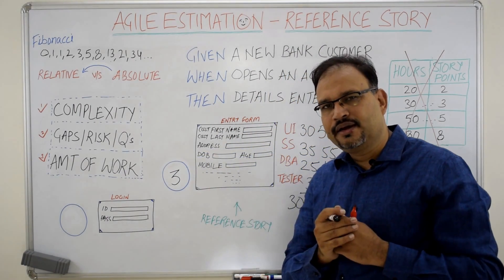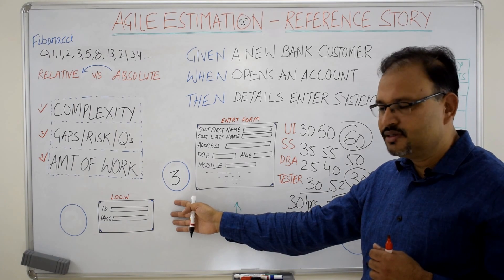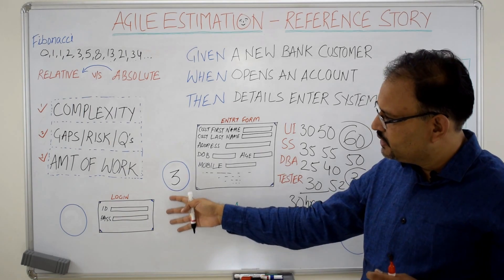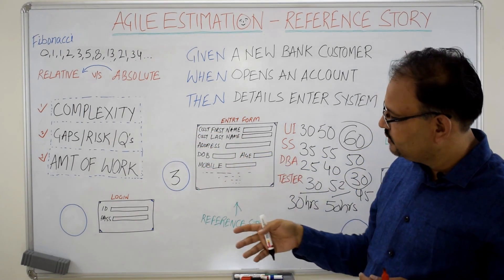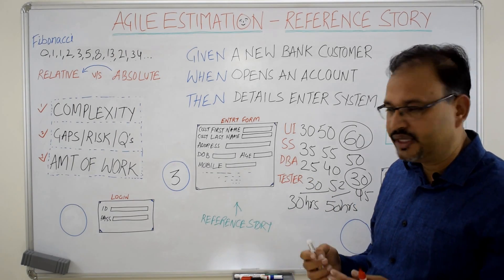Let's say the next story in the backlog is this login story which is having two text boxes and a simple logic of authenticating the user. This story based on 3 criteria when compared to the reference story is certainly going to attract a less story point, a story point of 2.